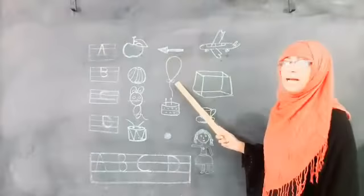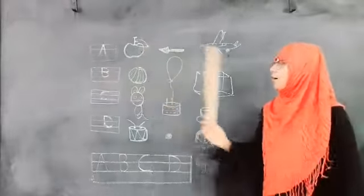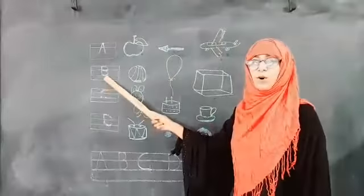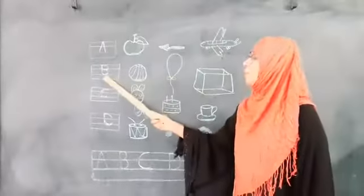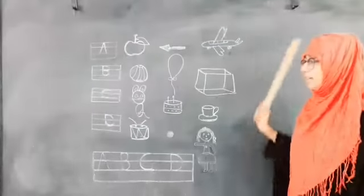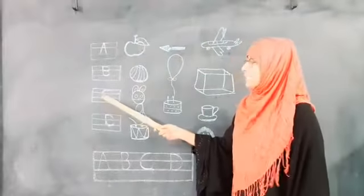And then B. B for ball, B for balloon, B for box. Again say, B for ball, B for balloon, B for box.